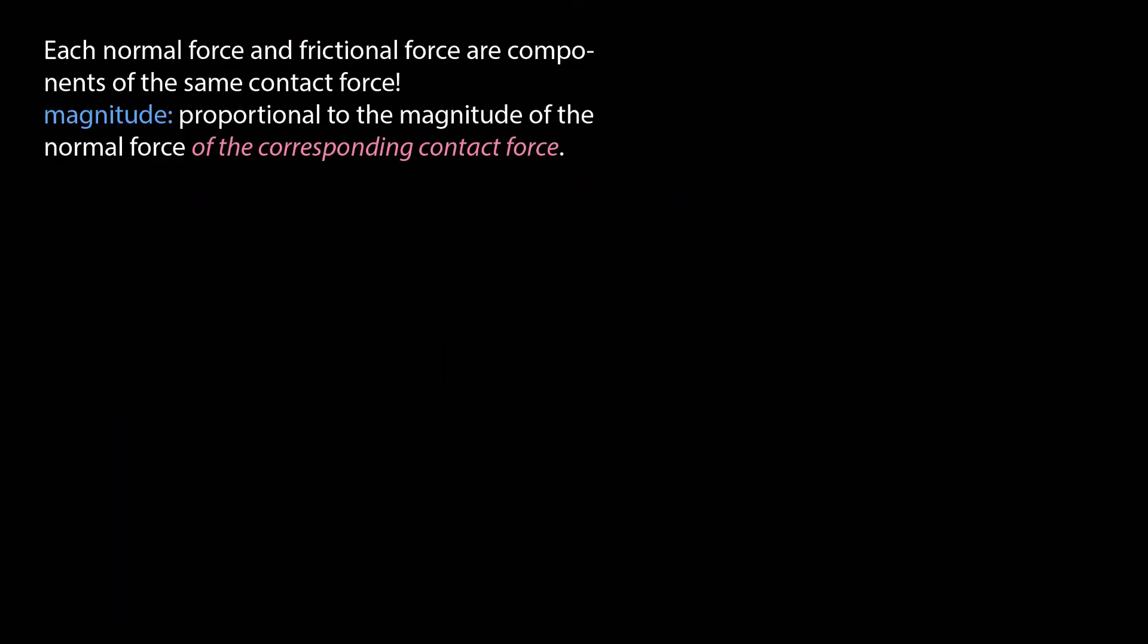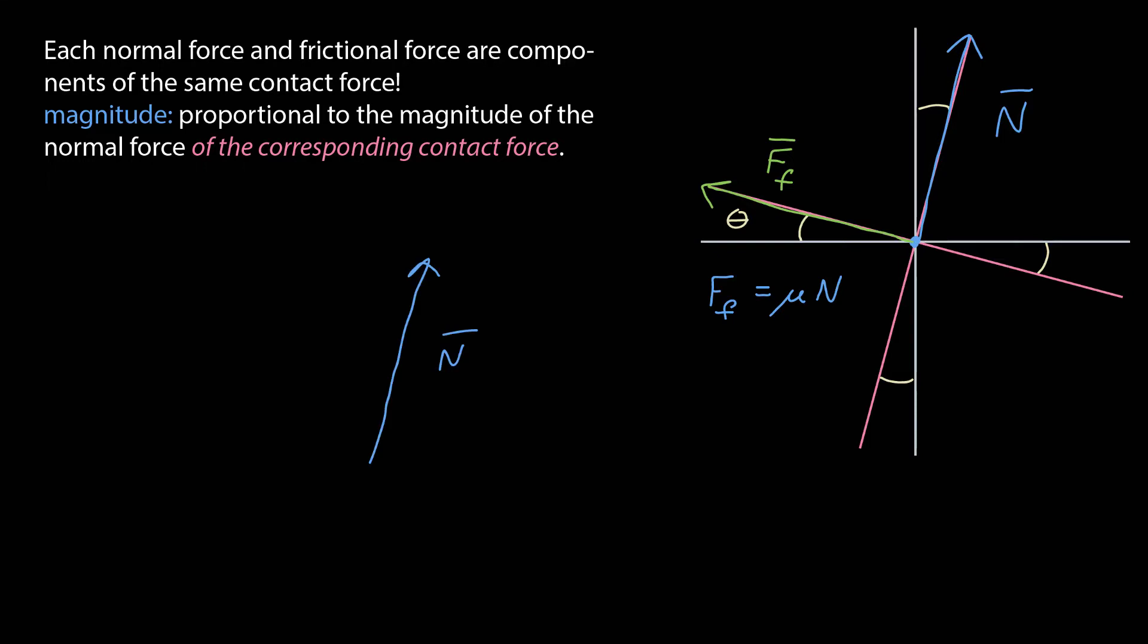A couple things to remember. Each normal force and frictional force are components of the same contact force. And so I might rewrite my definition of the magnitude. It's proportional to the magnitude of the normal force of the corresponding contact force. If I were to look at that free body diagram again, I can pull out that normal force. I can add it to the frictional force, and there's the resulting contact force.